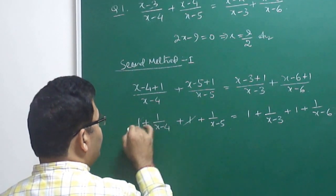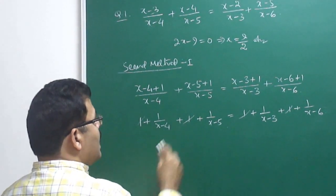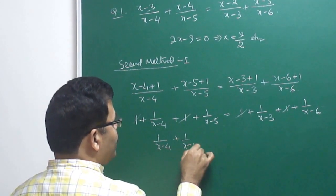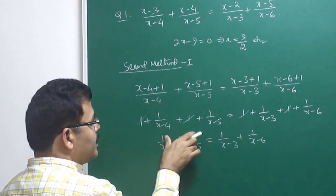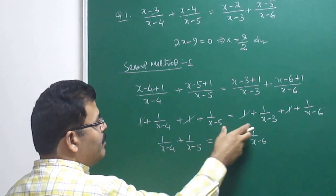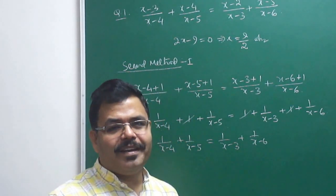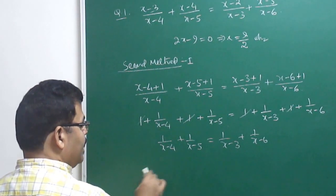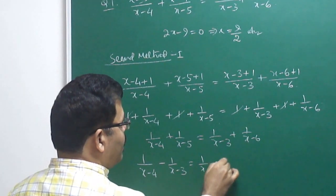The 1s on both sides cancel out since there are two 1s on each side. What remains is: 1/(x-4) + 1/(x-5) = 1/(x-3) + 1/(x-6). If we simplify further, the numerators are linear and the denominators are quadratic, meaning degree still appears. A smart student will bring terms across the equal sign — this reduces the degree.